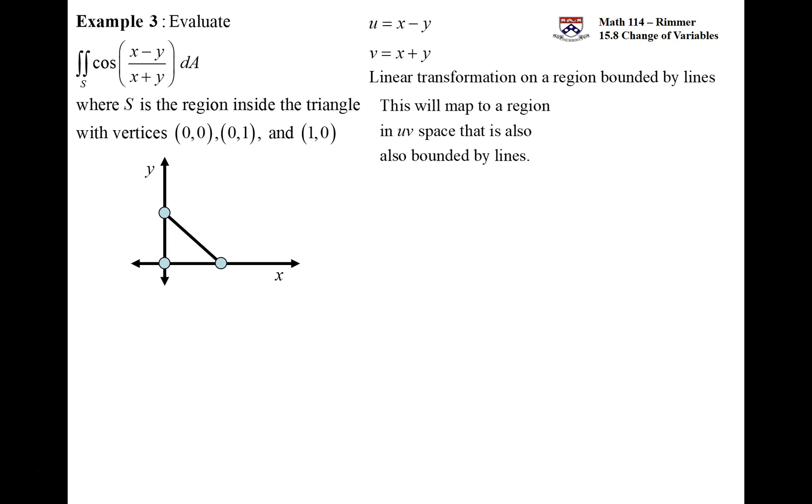What we can do then is have just the corner points in the xy space and see where they map to in the uv space, and we'll just connect the dots. With the transformation where I take the x and subtract the y, and I take the x and add on the y, I need to figure out what happens to the origin, what happens to (0,1), and what happens to (1,0).